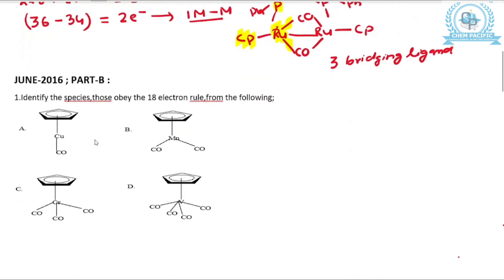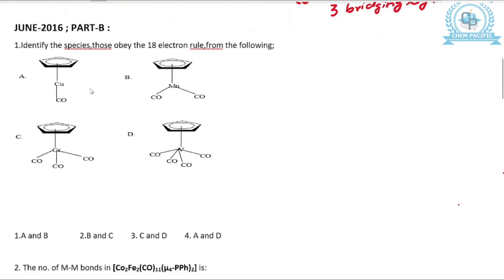This is from June 2016 Part B. Identify the species that obey the 18-electron rule from the following. For species A: CP is in the η5 mode, so it is a 5-electron donor. Copper has valence electrons 11, and there is 1 CO donating 2 electrons. So this is 5 + 11 + 2 = 18 electrons.